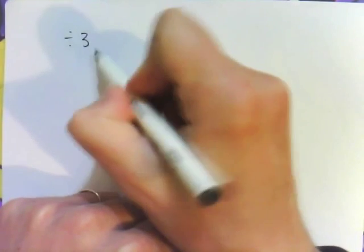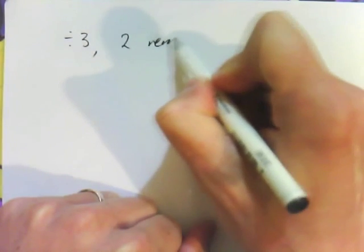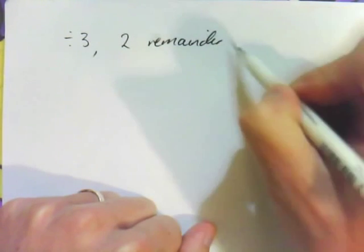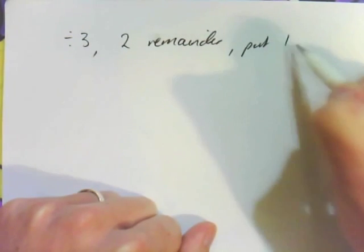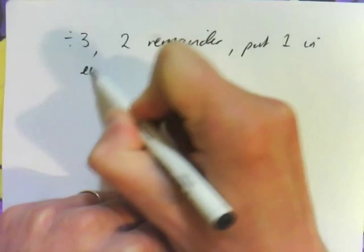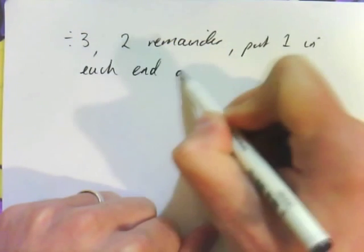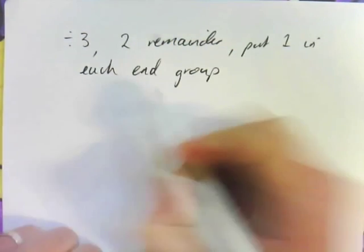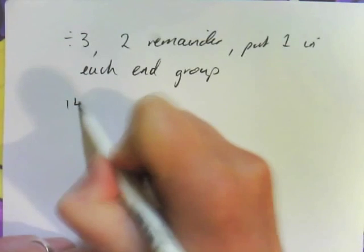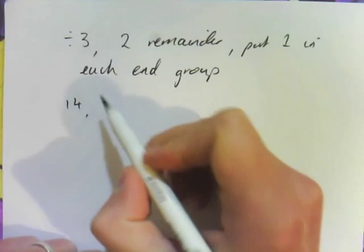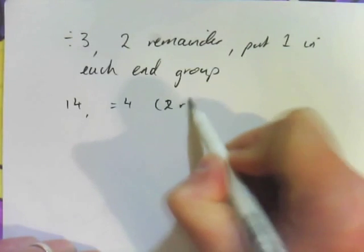What if you have 2 left over? If you have 2 remainder, put 1 in each end group. So my example would be, in this case, 14 divided by 3. You get 4 again, but you get 2 remainder.